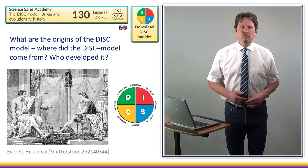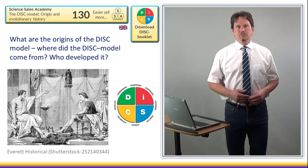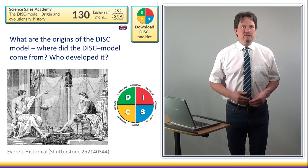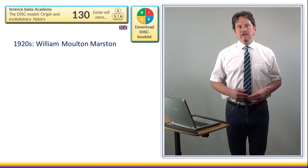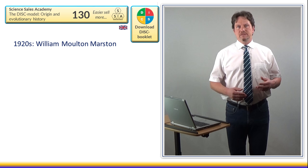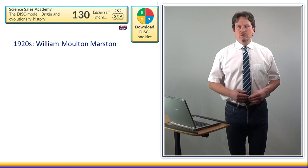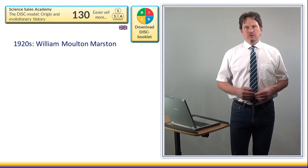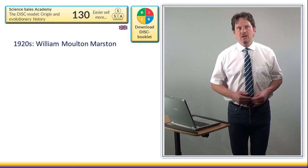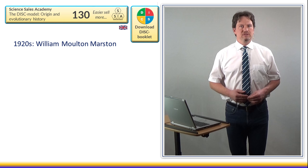What are the origins of the DISC model, where did it come from, and who developed it? The DISC model was formulated in its original principles already in the 1920s by William Moulton Marston. This Marston was a psychologist who also, quite incidentally, invented the lie detector. He was interested in what emotions people can show outwardly, and he wanted to develop an instrument to show this as tangibly as possible. He quickly came up with a model based on four segments as we still know it today.